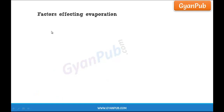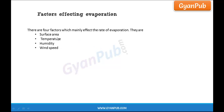Now, let us discuss about factors affecting evaporation. So what are the different factors which affect evaporation? Here we are going to discuss about the four factors which mainly affect the rate of evaporation. That is, if we increase these factors or decrease these factors, what is the effect on evaporation due to these changes? The four factors which affect the rate of evaporation are surface area, temperature, humidity, and wind speed.